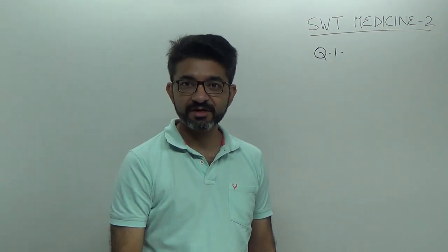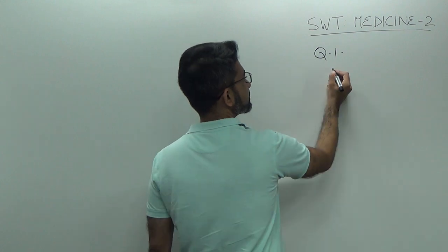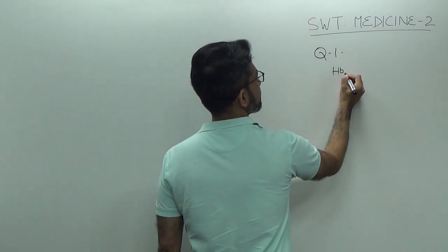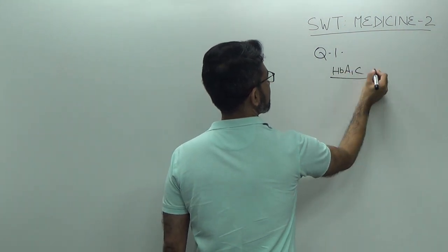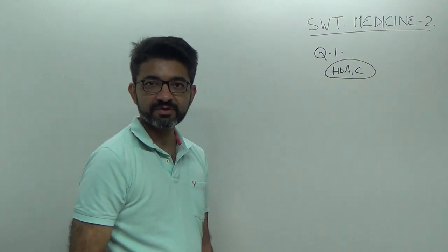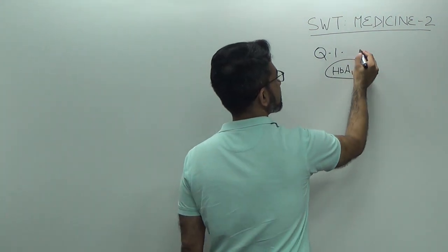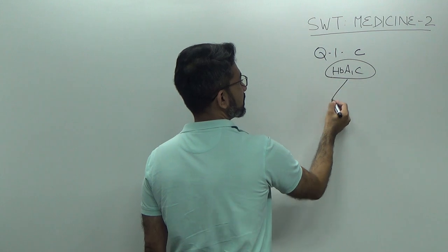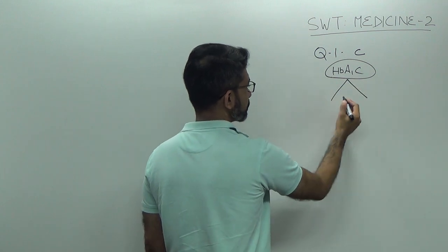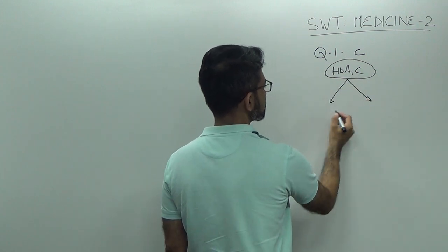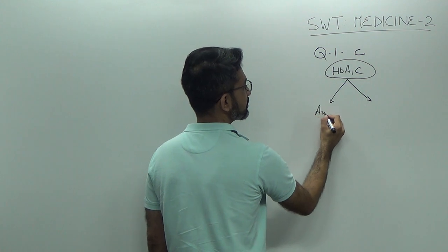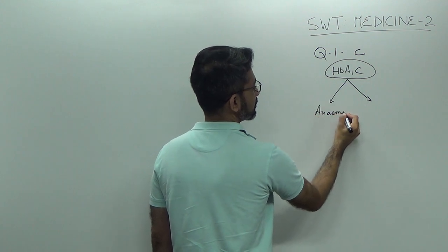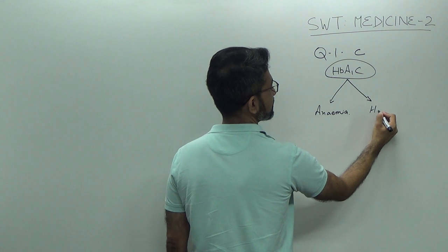Obviously we know that average blood glucose level is decided by HbA1c and the answer is C. Remember HbA1c can be falsely low in two conditions: in cases of anemia and in cases of hemoglobinopathies.